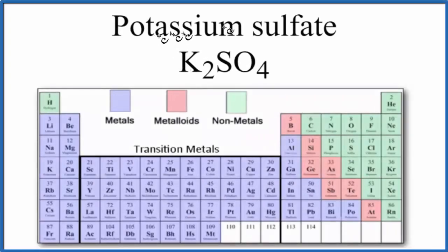In this video, we'll look at whether potassium sulfate, K2SO4, is ionic or covalent. The short answer is that the overall compound K2SO4 is an ionic compound.